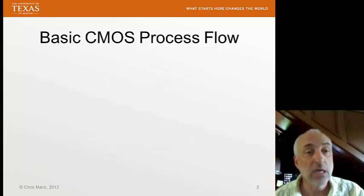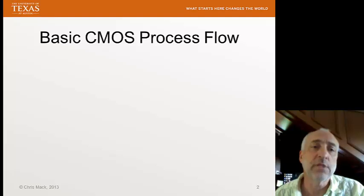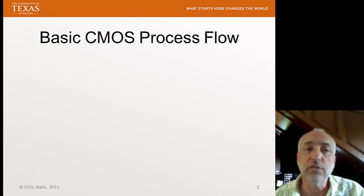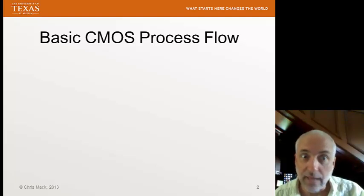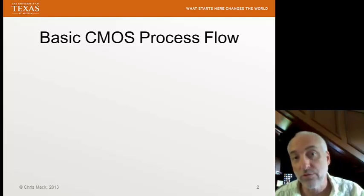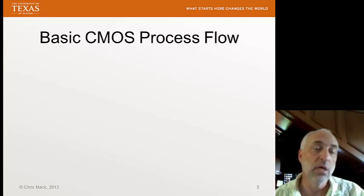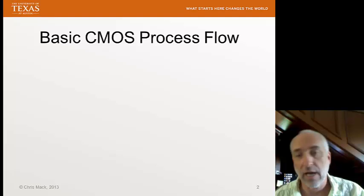Our topic today — we're going to go through a very basic, very simplified version of the typical CMOS process flow. Our emphasis will be on looking at how the different process steps tie together to make a CMOS circuit. We won't cover everything today; there are lots of steps we won't even mention, but we'll cover the basics and see the order they're done in and what structures result. When we go through the individual process steps in detail — oxidation, deposition, etch, etc. — we'll have more context for how they fit.